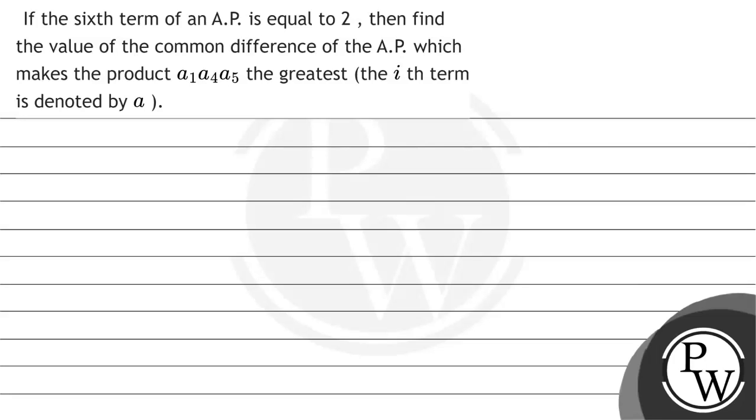Hello and welcome to the channel. The question says if the 6th term of an A.P. is equal to 2, then find the value of the common difference of the A.P. which makes the product A1, A4, A5 the greatest.